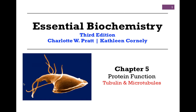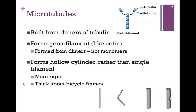We're continuing our studies of protein function in Chapter 5, and we're continuing to look at structural proteins. In this lesson, we'll look at tubulin and microtubules. In some ways, the assembly of tubulin to form these microtubules is very similar to actin, and in some ways it's different. The first difference is the fundamental unit is a dimer rather than a monomer. You see the two subunits, alpha and beta tubulin — that's our dimer, and those dimers will assemble to form the protofilament.